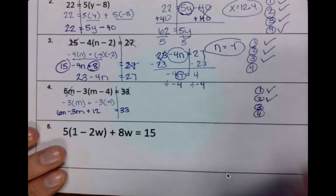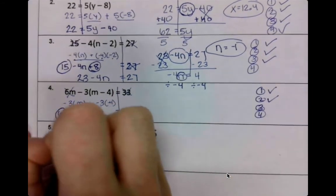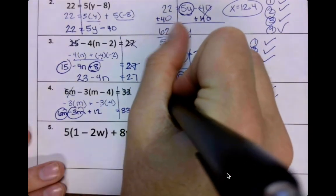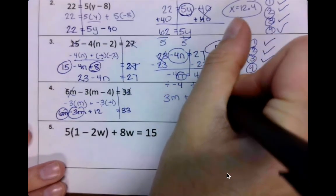Did that. Did that. Now combine like terms. These two can go together. 6 minus 3 is 3m. Add my plus 12, and that equals 33.